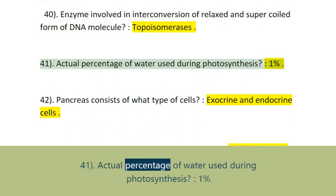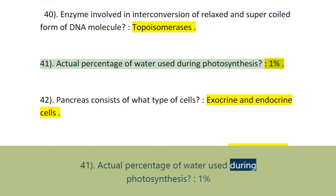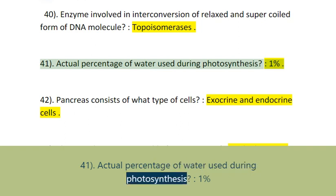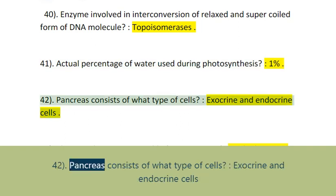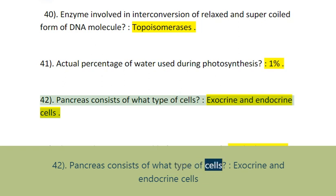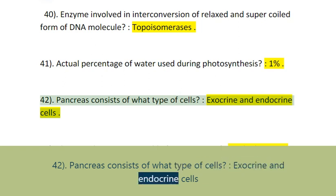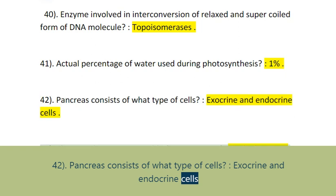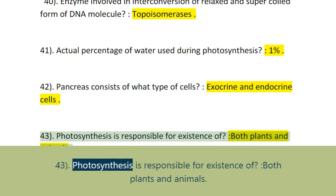Question 41: The actual percentage of water used during photosynthesis is 1%. Question 42: The pancreas consists of what type of cells? Exocrine and endocrine cells.